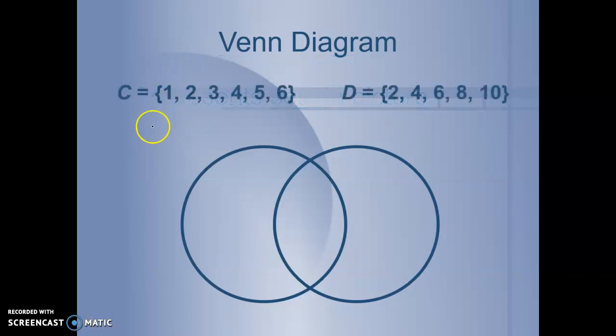So let's take a look at two sets. Set C is 1, 2, 3, 4, 5, 6. And set D is 2, 4, 6, 8, and 10. We know that set C has one all by itself, but both sets have two. So we write that in the middle so that it's in both sets. Set C has three, but both sets have four. Set C has five, both sets have six. And set D also has eight and ten, separate from set C.